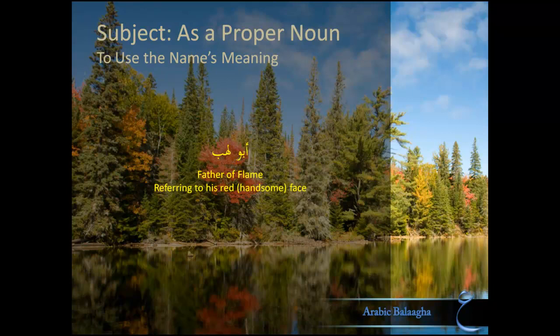But there are other benefits to using proper nouns as well. The first benefit is to give honor or humiliation to the subject based on the meaning of their name. For example, Abu Lahab — his original name is Abdul Azizah, but he was given the nickname Abu Lahab, meaning 'father of flame,' on account of his fiery red face, which was a sign of beauty at that time. So people would use this name to honor his looks, as he was one of their leaders. Thus, using the name Abu Lahab has the added benefit of invoking the name's meaning.